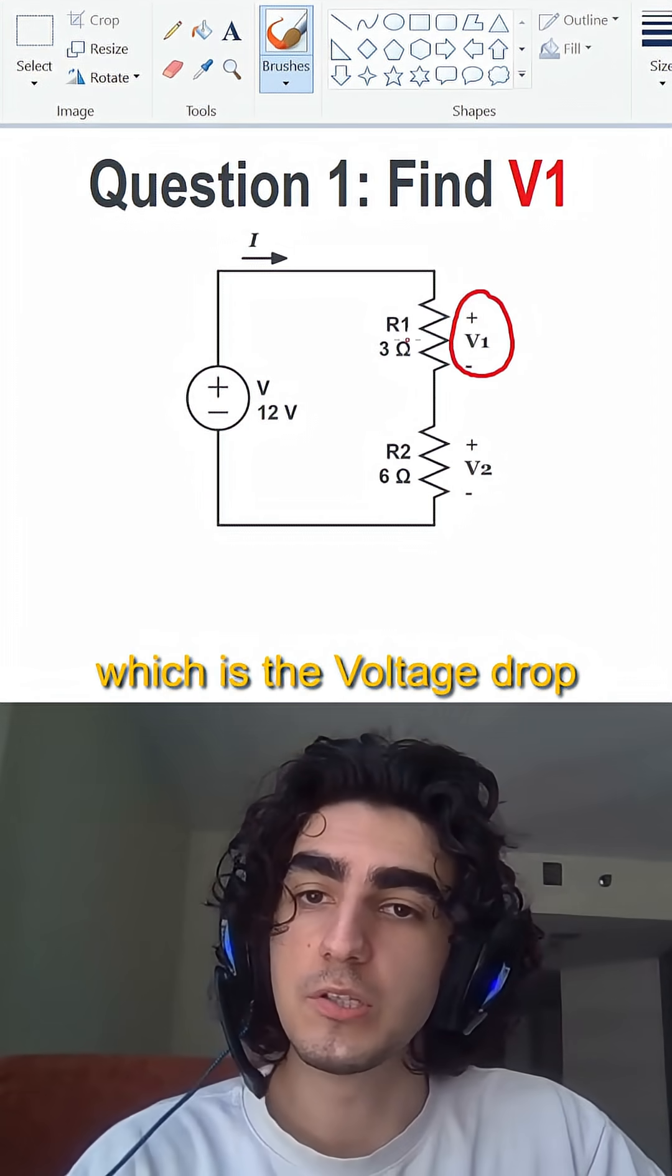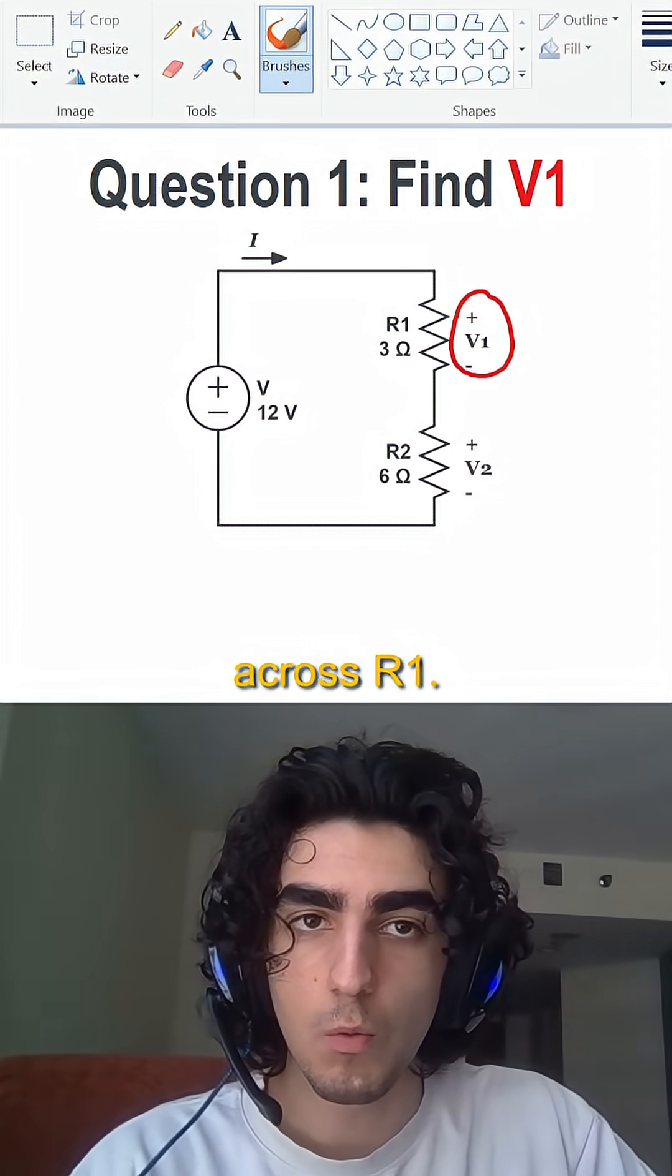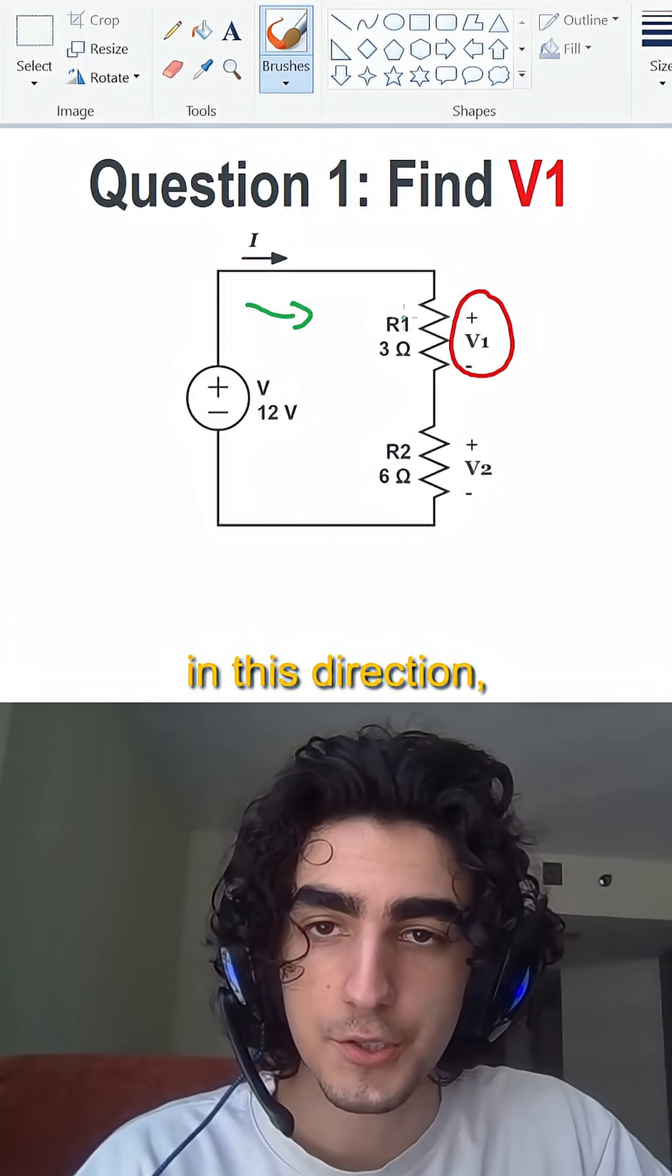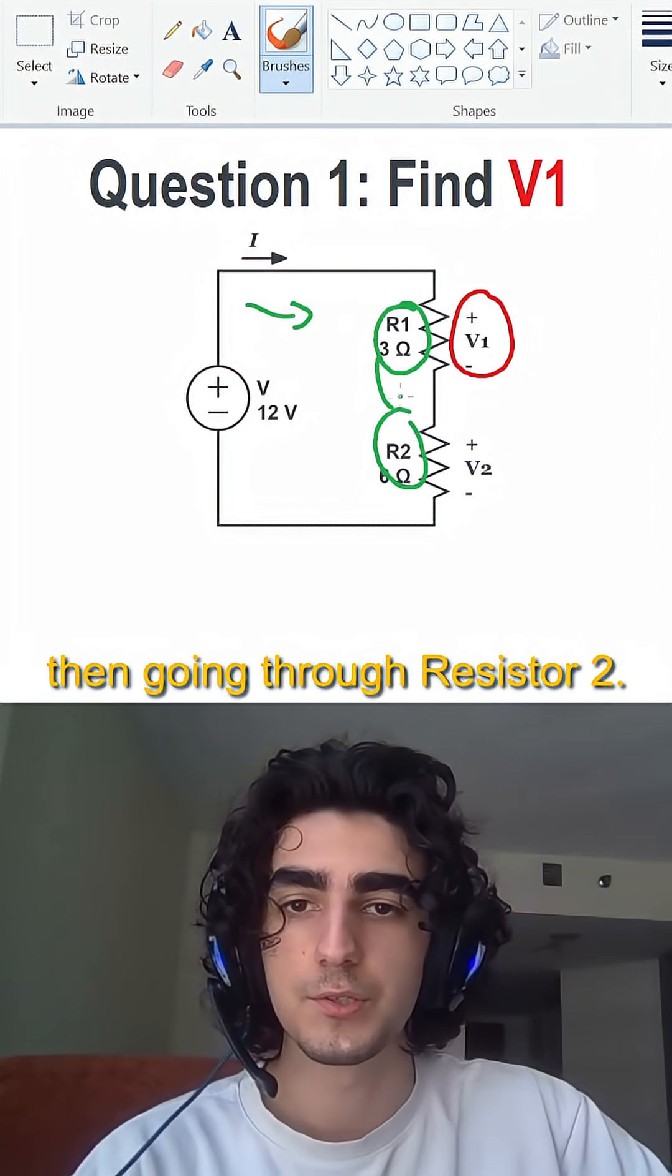Okay, so we have to find V1, which is the voltage drop across R1, and we have a 12-volt battery source with the current going through in this direction, going through resistor one, and then going through resistor two.